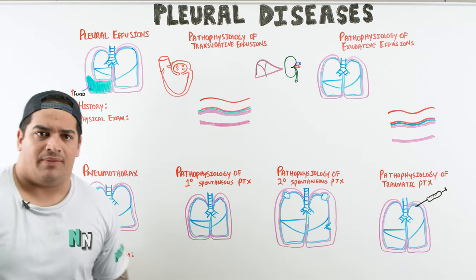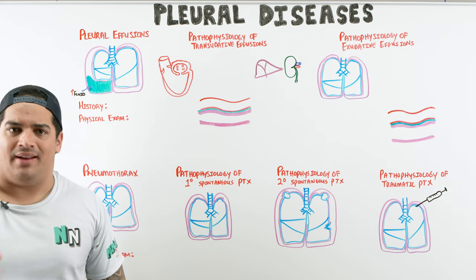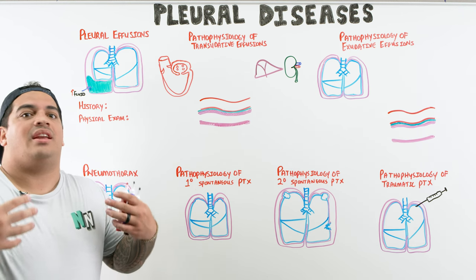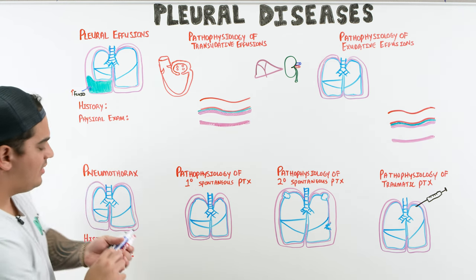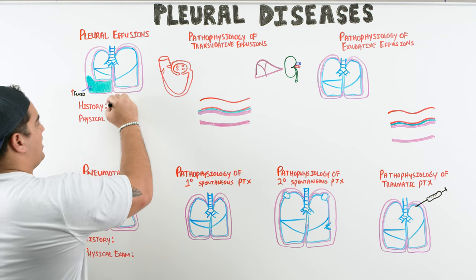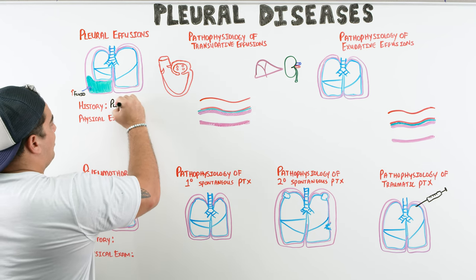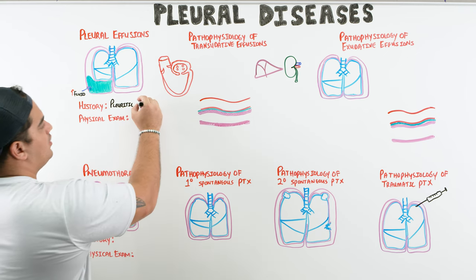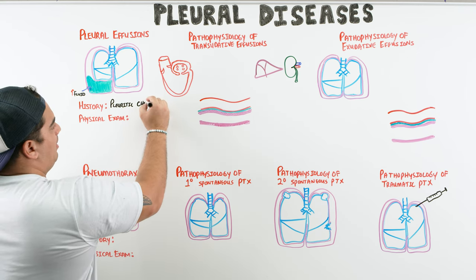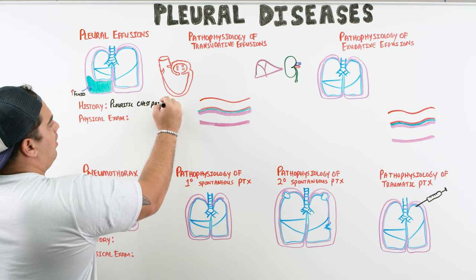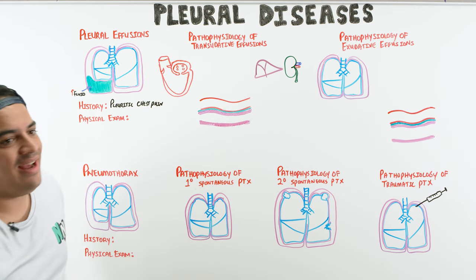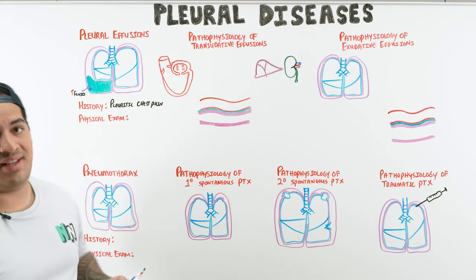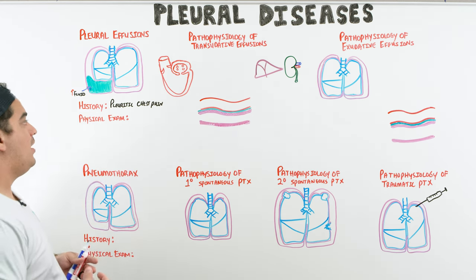When a patient presents with a pleural effusion, the most common finding is pain with breathing — what we call pleuritic chest pain. Listen for that in the clinical vignette; it should tip you off to think about pleural disease. If the effusion gets large and compresses the lungs, it can also cause dyspnea.